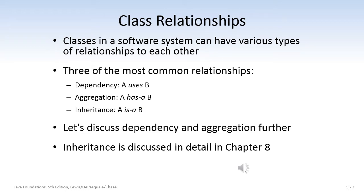Classes can have various relationships with each other, and three of the most common relationships are dependency, aggregation, and inheritance. In dependency, Class A uses Class B. In aggregation, Class A has a B, and in inheritance, Class A is a B.